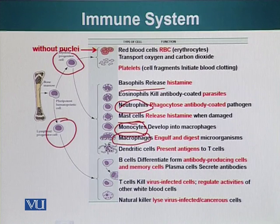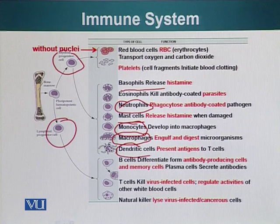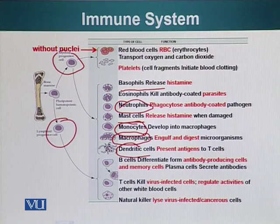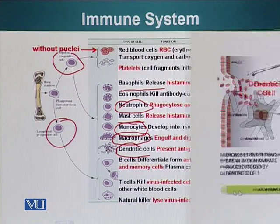There is another class of cells we will talk about in more detail later: dendritic cells. These dendritic cells are also phagocytic in nature — they ingest bacteria or the pathogen, degrade it into little fragments, and present the parts of the pathogen by displaying them on their surface to other immune cells. Let's see what exactly they do.